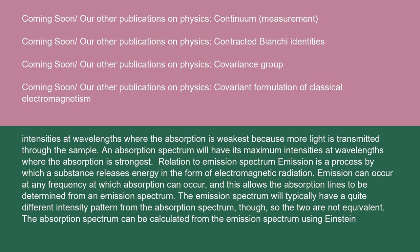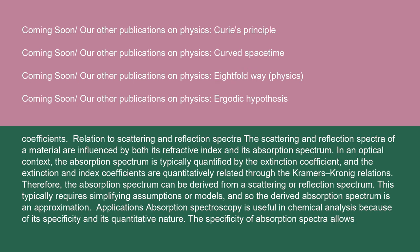The absorption spectrum can be calculated from the emission spectrum using Einstein coefficients. The scattering and reflection spectra of a material are influenced by both its refractive index and its absorption spectrum. In an optical context, the absorption spectrum is typically quantified by the extinction coefficient, and the extinction and index coefficients are quantitatively related through the Kramers-Kronig relations. Therefore, the absorption spectrum can be derived from a scattering or reflection spectrum, though this typically requires simplifying assumptions or models, so the derived absorption spectrum is an approximation.